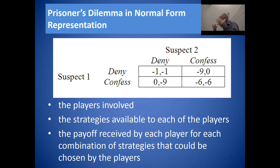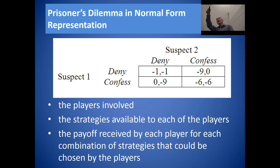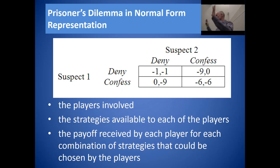In the bottom left-hand corner: suspect one provides a confession, gets away scot-free with zero months in prison, while suspect two — who chose to deny — gets sentenced to the full nine months. In the top right: suspect one denies and suspect two confesses, so suspect one gets nine months and suspect two gets off. That is just a way of encapsulating and describing in matrix form the game that we set up.